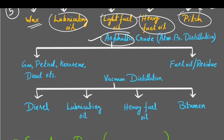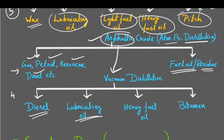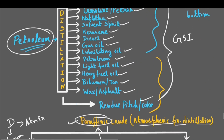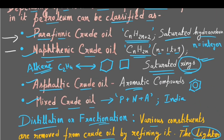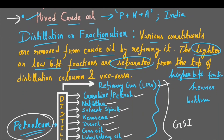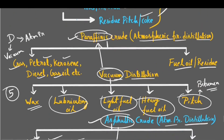For asphaltic crude, atmospheric pressure distillation gives a mixture of gasoline, petrol, kerosene, diesel, and gas oil in one portion, and fuel oil or residue in another. Vacuum distillation of asphaltic crude gives four distinct parts: diesel, lubricating oil, heavy fuel oil, and lastly bitumen or pitch. For answer writing, first write about the four kinds of crude oil — paraffinic, naphthenic, asphaltic, and mixed — then write one or two lines about distillation and fractionation, then go directly to this chart.